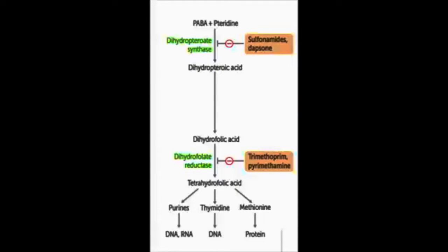Now we're going to talk about anti-metabolites. They basically interfere with the bacterial cell's ability to form and process DNA. The problem is that in general they resemble chemotherapy agents. When we look at adverse effects, they often resemble those of chemotherapy, which may include signs of rapid cell turnover affecting GI mucosa and bone marrow. Those are the systems you have to worry about with anti-metabolites.